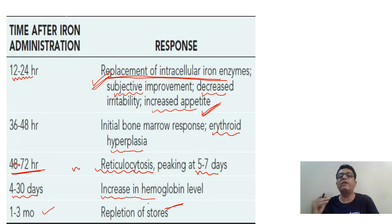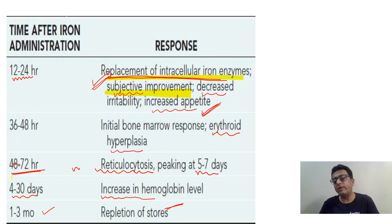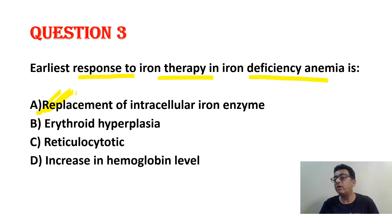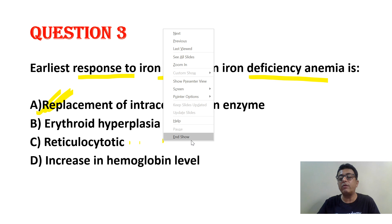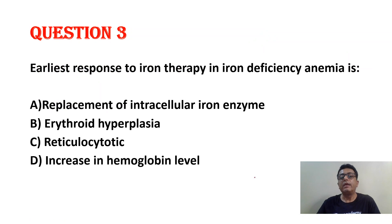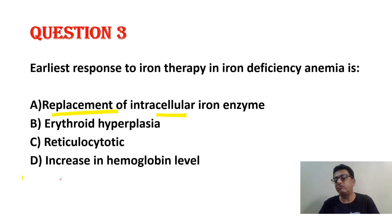What is the earliest change when you start iron in iron deficiency anemia? The earliest change is replacement of intracellular iron-containing enzymes, or subjective improvement. Erythroid hyperplasia occurs at 36 to 48 hours, reticulocytosis at 48 to 72 hours, and hemoglobin begins to increase from the 4th day onward.